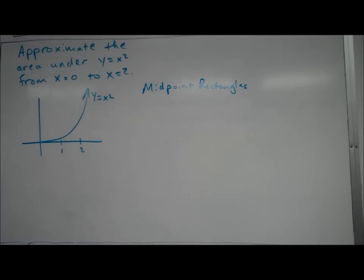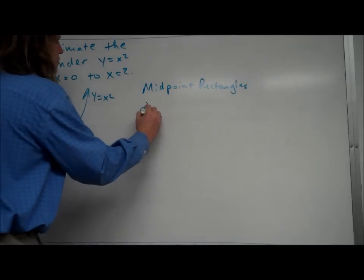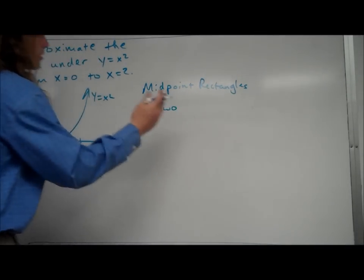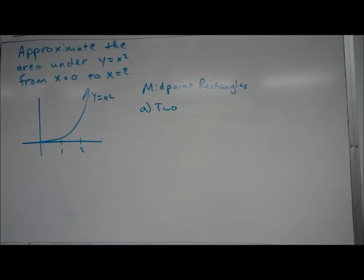Okay, we're going to take a look at midpoint rectangles now. This is the third way that we can approximate things that you need to know how to use. A midpoint rectangle—we'll just use two of them, you could use more to get better approximations—uses the midpoint of the interval to determine the height of the rectangle.